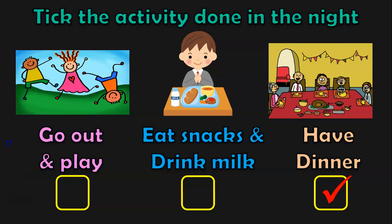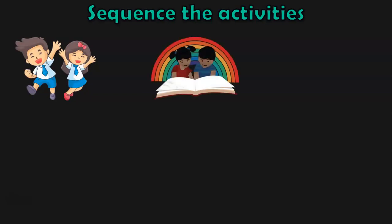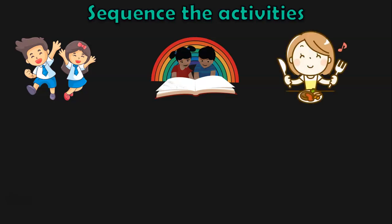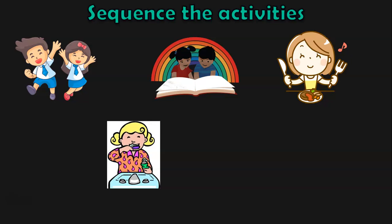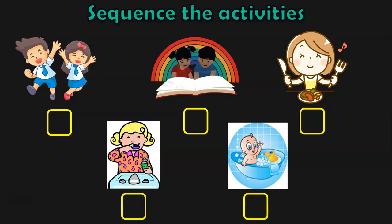The next question is to sequence the activities. We have children going to school and studying in school. You will have to sequence the activities by putting numbers. Getting up and brushing the teeth is the first activity. After that, take your bath. After having a bath, have your breakfast. Then get dressed and go to school, and in school you study. This is how sequencing the activities is done.